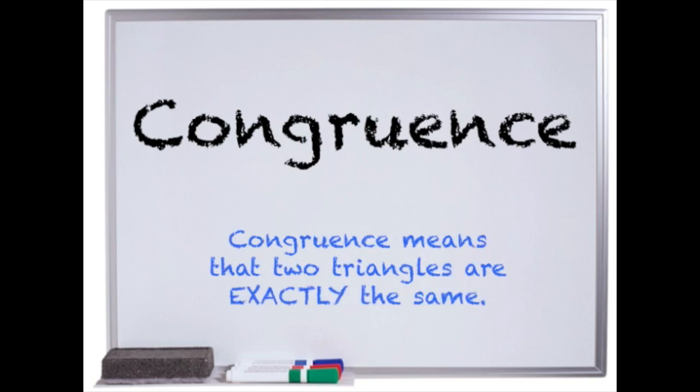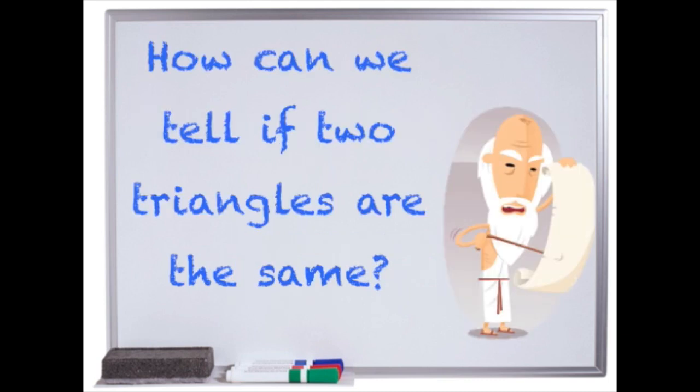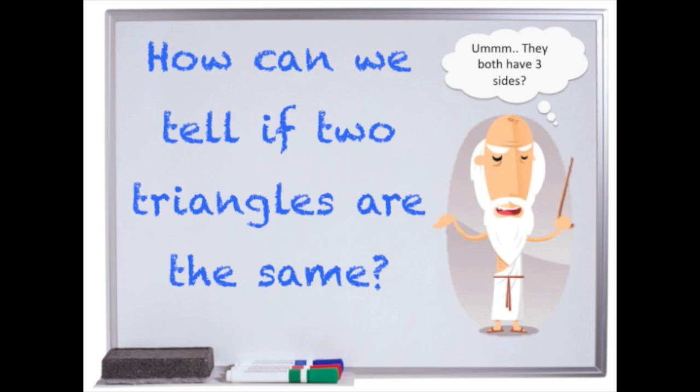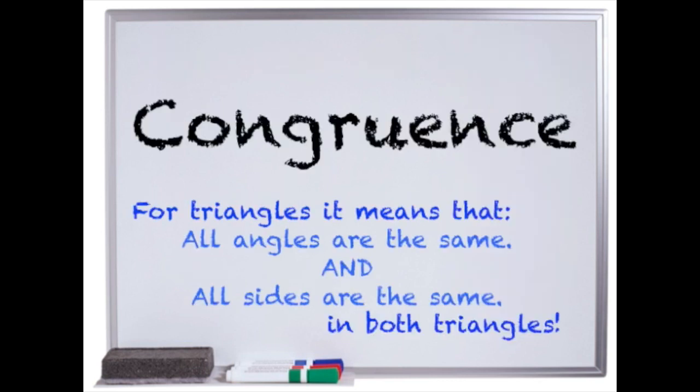So when we are talking about triangles, we need to know that two congruent triangles are exactly the same in every way. Well, how can we tell if two triangles are the same? No, it's not because they both have three sides. When two triangles are congruent, it means that all angles are the same and all sides are the same in both triangles.